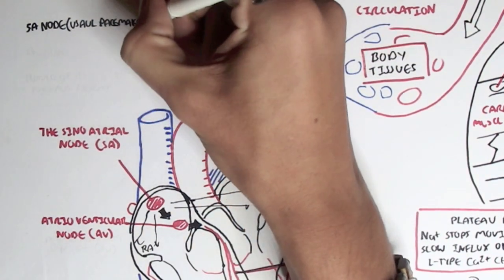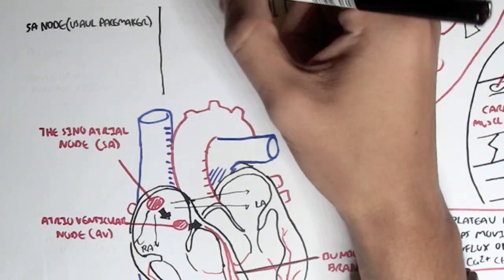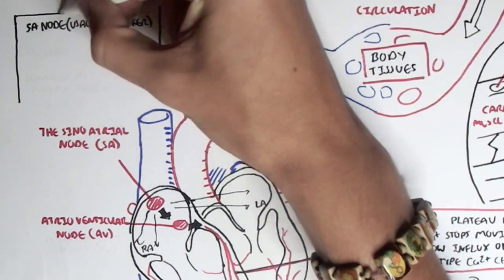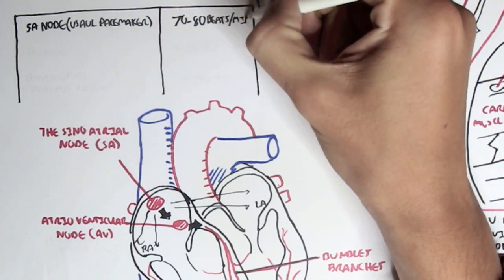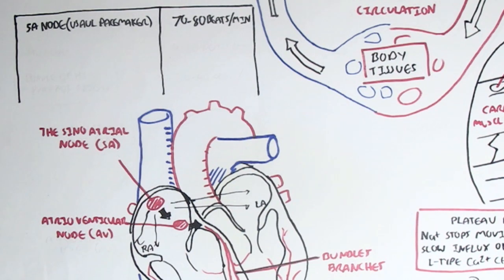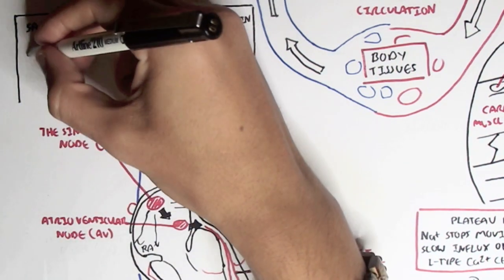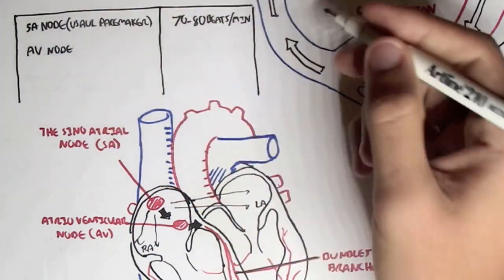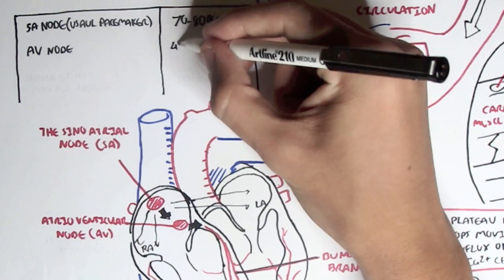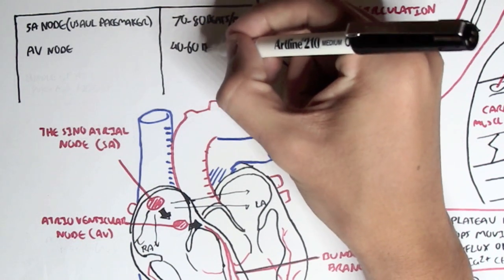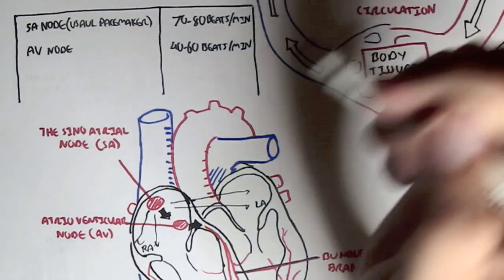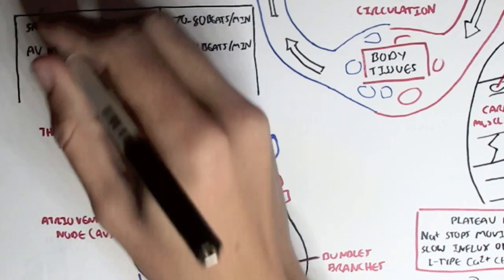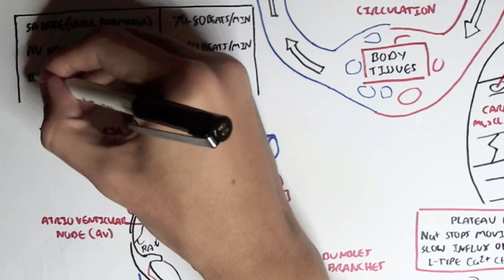The main pacemaker cells are the SA node — this is the usual, main pacemaker. Its action potential causes the heart to beat 70 to 80 beats per minute. Interestingly, the heart can still function if the SA node is damaged, because the AV node can take over. However, the AV node will only cause 40 to 60 beats per minute, which is lower.